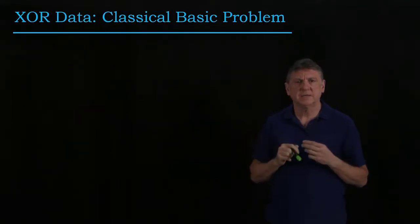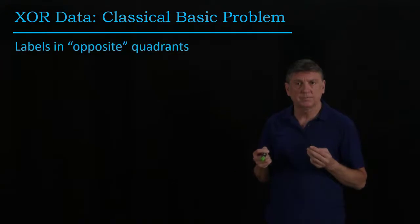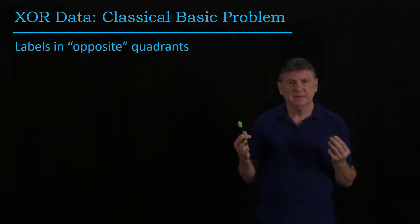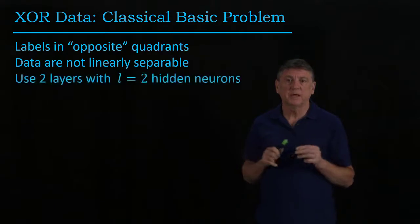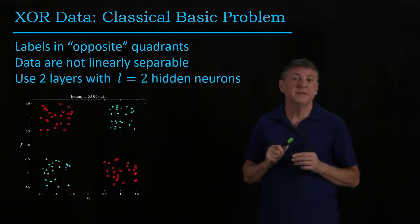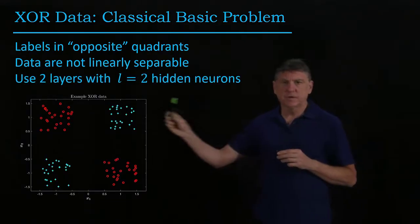Let's take a classic problem in neural networks. It's sometimes referred to as the exclusive OR or the XOR problem. And what we have in this is labels that are not linearly separable, and they're sometimes referred to as being in opposite quadrants.